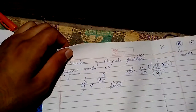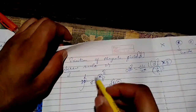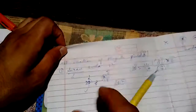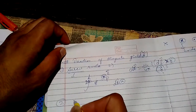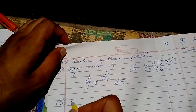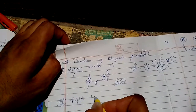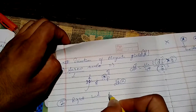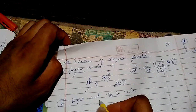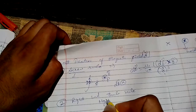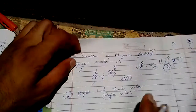Now we have what I call the magic rule, but its actual name is the Right Hand Thumb Rule. I call it the magic rule because it is the best way to find the magnetic field at any point.